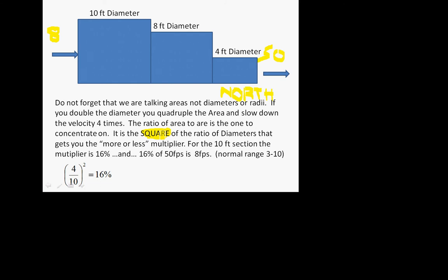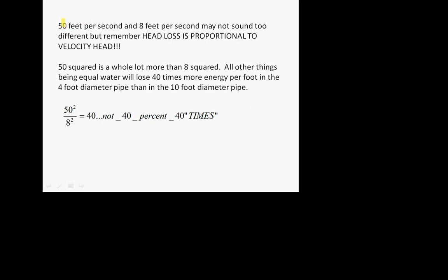Energy loss is proportional to velocity head. The 50 feet per second versus 8 feet per second may not sound that different, but when you square them — 50 squared over 8 squared — you get 40 times more energy loss per foot of pipe. That's where friction losses come in: spread out over the length of the pipe, there is 40 times more loss — not 40 percent, but 40 times more — through that short 4-foot pipe than through the big 10-foot diameter pipe, because the velocities are much much less.